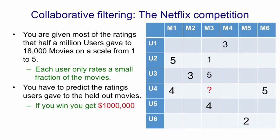You can draw the ratings in a big matrix, where we have movies across the top and users down the side. For example, user 2 gave a rating of 5 to movie 1 and a rating of 1 to movie 3. User 4 gave a rating of 4 to movie 1, and the question is: what rating did he give to movie 3?